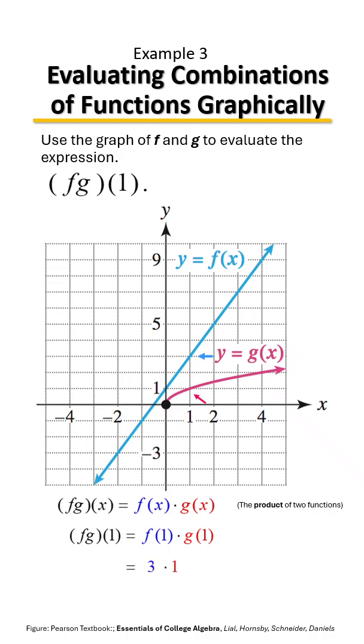And so we're going to multiply those two values together and we have f times g of 1 equals 3.